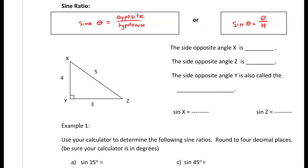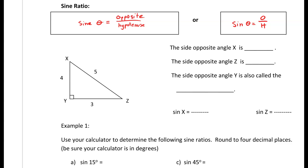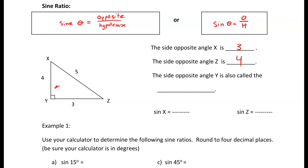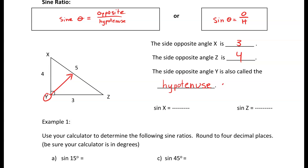Looking at the diagram with a triangle with sides of 4, 5, and 3, and angles X, Y, and Z — remember, angles are always capital letters. The side opposite angle X is 3. The side opposite angle Z is 4. The side opposite angle Y, which is 90 degrees, is also called our hypotenuse, and the length is 5.